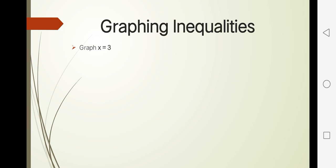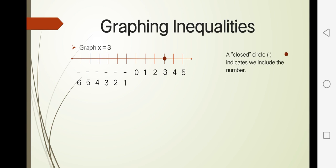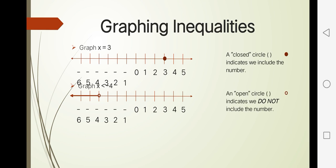Let's try to graph x equals 3. The x there is equal to 3. The closed circle indicates that we include the number. Let's try x is less than negative 4. As you can see, the closed circle becomes an open circle, which indicates that we do not include the number 4.